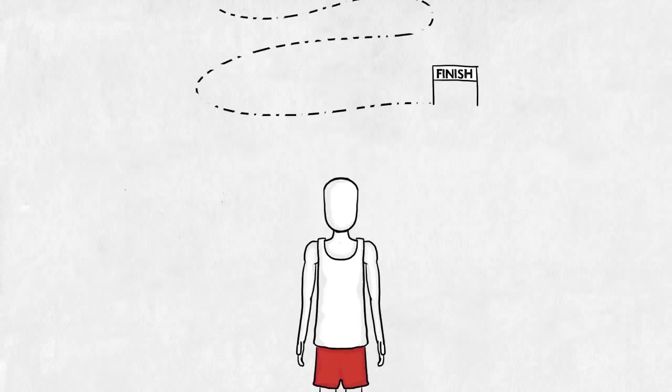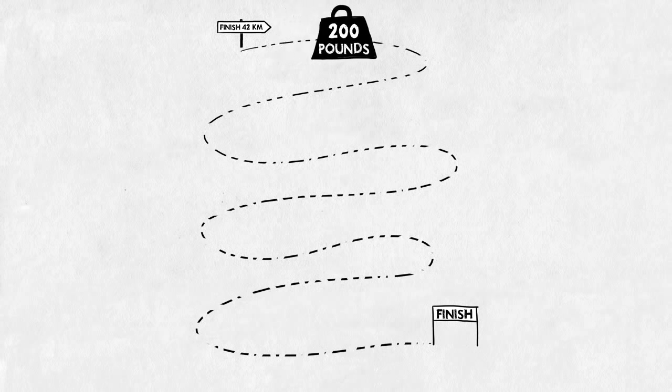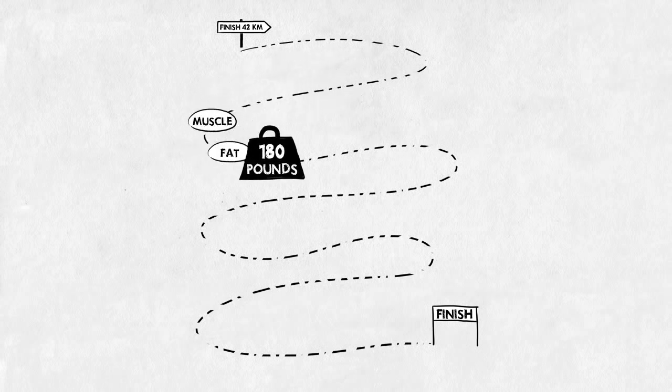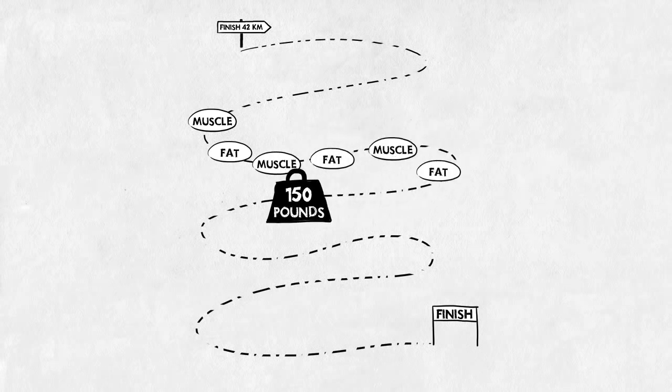The marathoner is a different story. Every pound in his body has to be carried around for a total of 42 kilometers. He gains a lot of benefits by being light. So all excessive muscle mass and fat has to be shed in order to be a top marathoner.